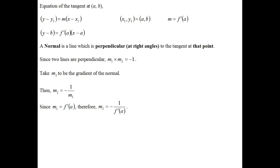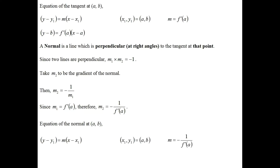m2 is the gradient of the normal, whereas m1 was the gradient of the tangent. Since the normal passes through the same point as the tangent, they both pass through the point (a, b). To find the equation of the normal we use y minus y1 equals m times x minus x1, since the normal is also a straight line. With x1, y1 as (a, b) and m equal to minus 1 over f prime of a, we substitute to get y minus b equals minus 1 over f prime of a times x minus a.